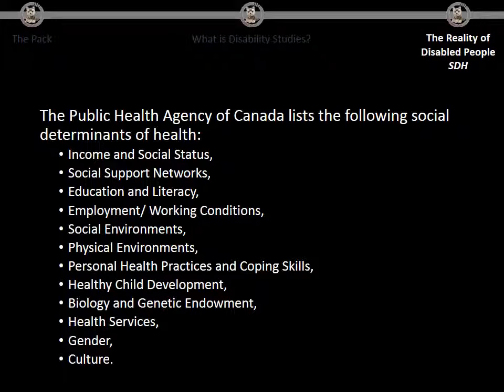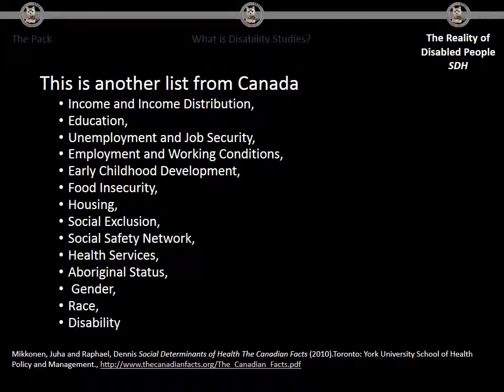The Public Health Agency of Canada lists the following social determinants of health: income and social status, social support networks, education and literacy, employment, working conditions, social environments, physical environments, personal health practices and coping skills, healthy child development, biology and genetic endowment, health services, gender, and culture. A second Canadian framework lists: income and income distribution, education, unemployment and job security, employment and working conditions, early childhood development, food insecurity, housing, social exclusion, social safety networks, health services, Aboriginal status, gender, and race. In this second framework, disability actually shows up as a social determinant itself.